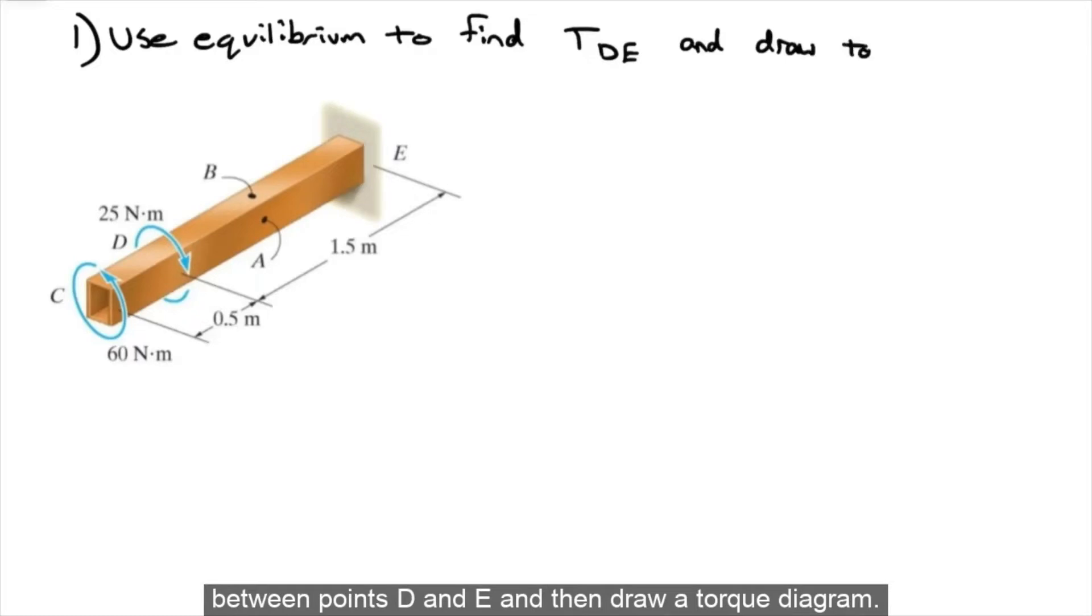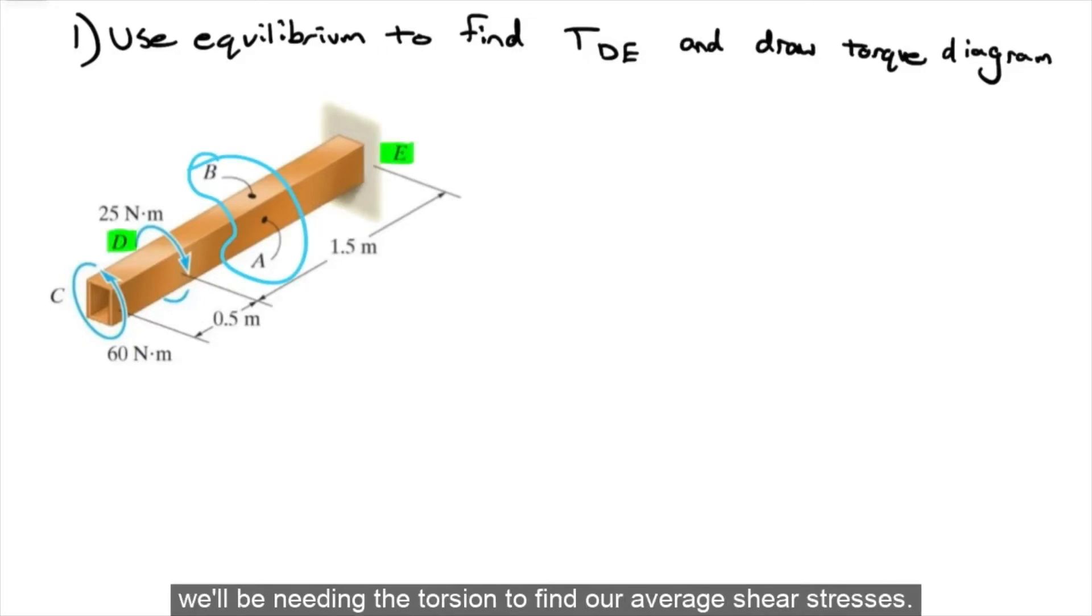The first step we want to do is use equilibrium to find the torsion between points D and E, and then draw a torque diagram. Since points A and B are located between D and E, we'll be needing the torsion to find our average shear stresses.